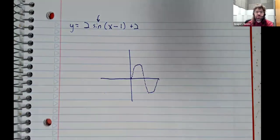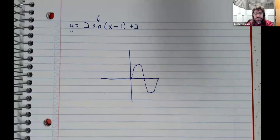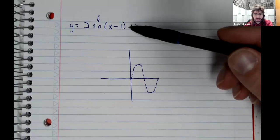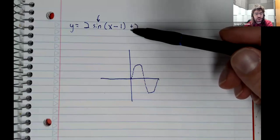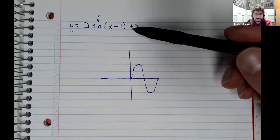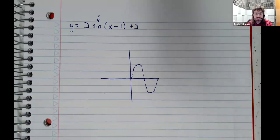Usually when you're asked to graph one of these functions by hand, what you're going to be looking for is a single period. Because remember, this function repeats forever. Once we know what one period looks like, we know what the entire period looks like.